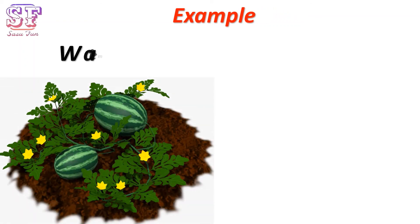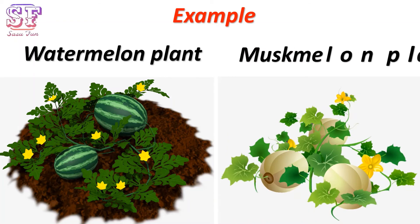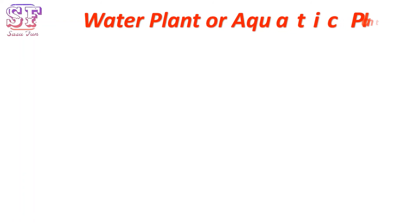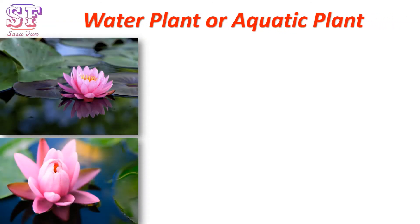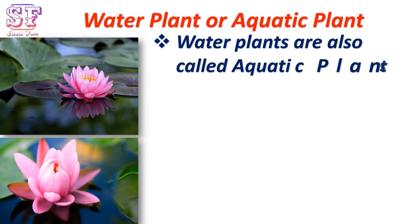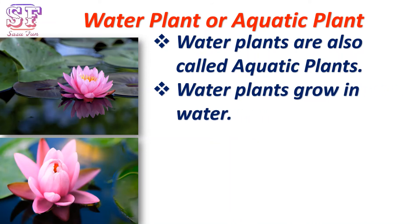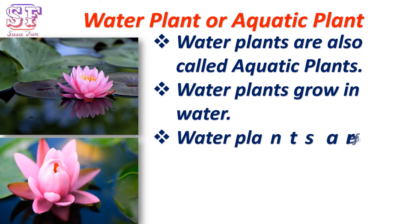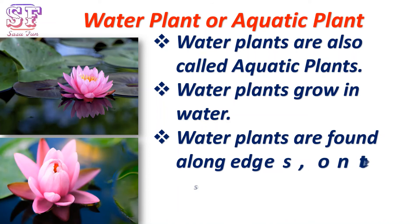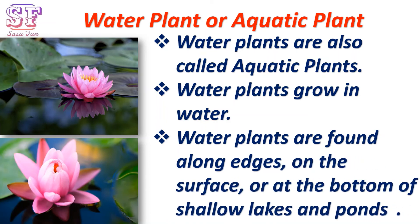Water plants are also called aquatic plants. They grow on the surface or at the bottom of shallow lakes and ponds.